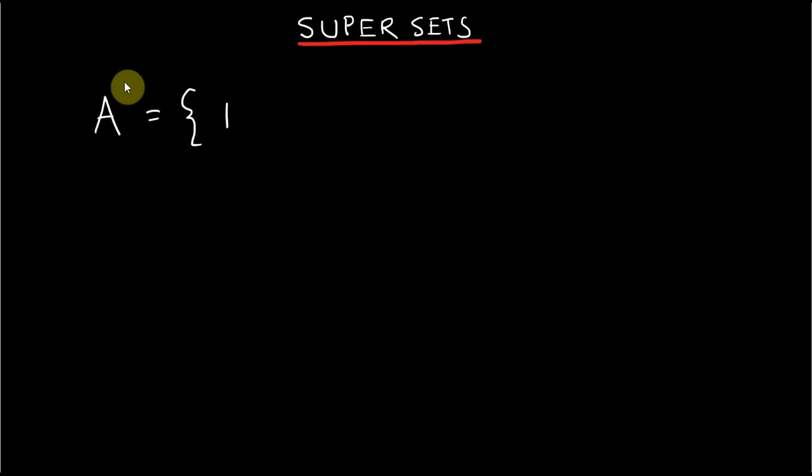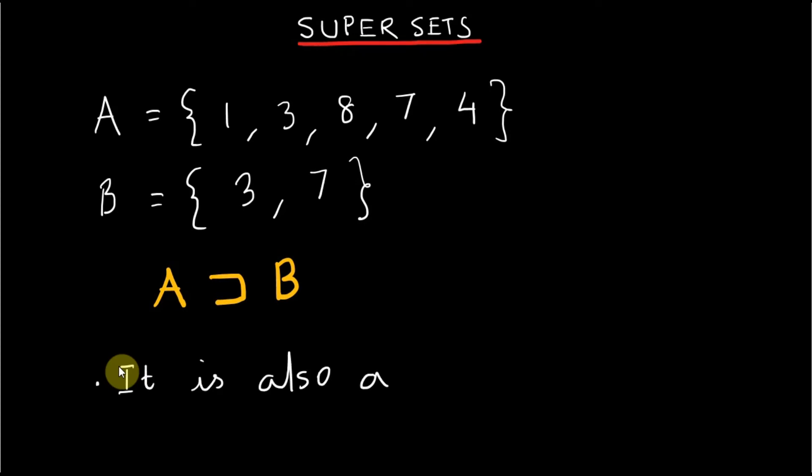Let A be a finite set with elements 1, 3, 8, 7, 4 and B be set with elements 3, 7. Then A is superset of B because it has all the elements of set B. It is also a proper superset because A is not equal to set B.